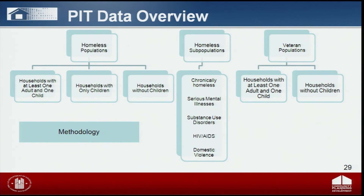The PIT module has four basic components: homeless populations, homeless subpopulations, veteran populations, and methodology. Homeless populations include persons and households counted and their demographic characteristics by household type. Homeless subpopulations include total chronic homeless individuals and families with subpopulation data on adults with serious mental illness, substance use disorders, HIV/AIDS, and victims of domestic violence (optional). Veteran populations include total veteran persons, veteran households, and demographic characteristics of veterans by household type. The methodology section includes details about how your continuum of care conducted the point-in-time count.